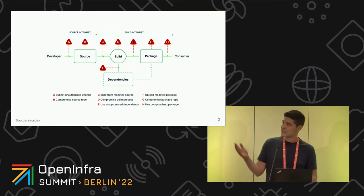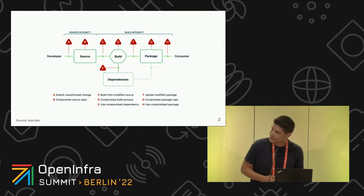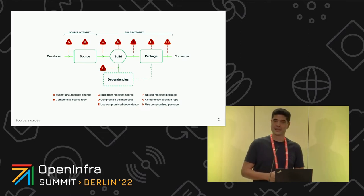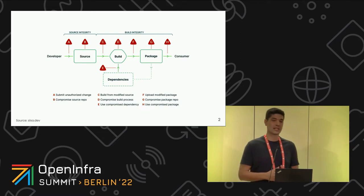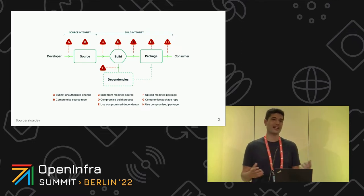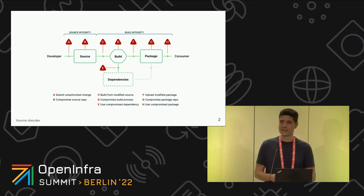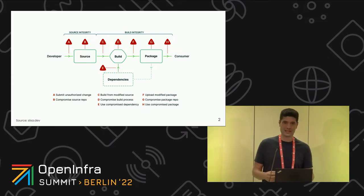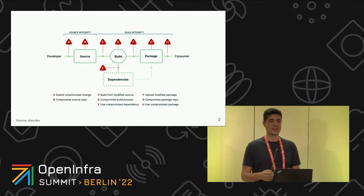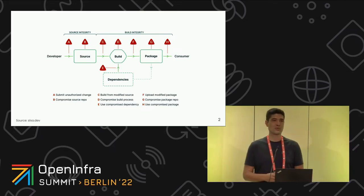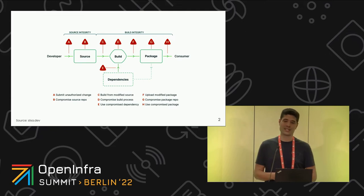If you look at this picture, we took it from the SALSA framework. Starting from the left, you have source integrity — we need to make sure our source code is protected and no one pushes malicious code. On the right-hand side, we have build integrity, which is the part we're going to focus on today. We want to make sure that what we build from our source code is what we actually see in our production cluster.